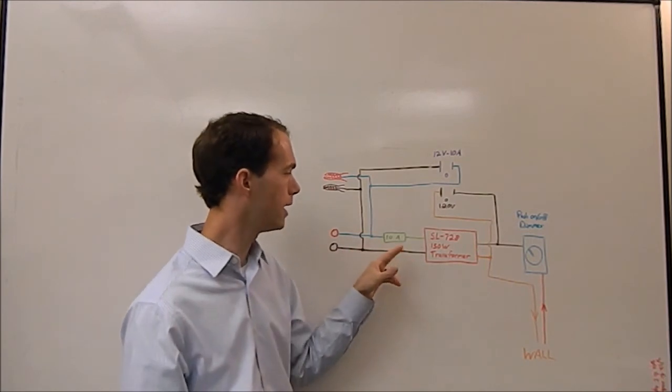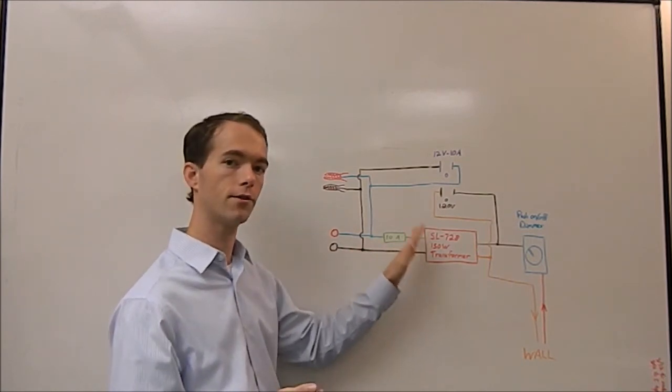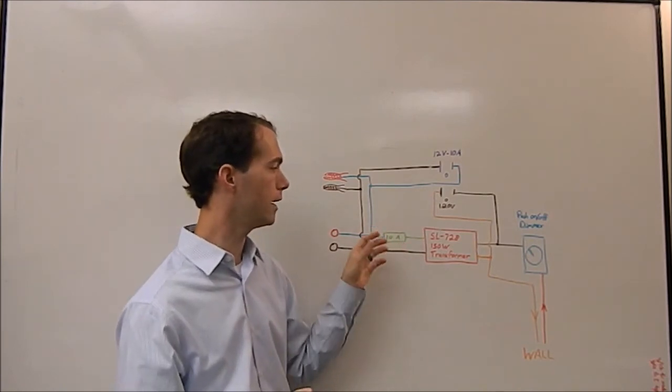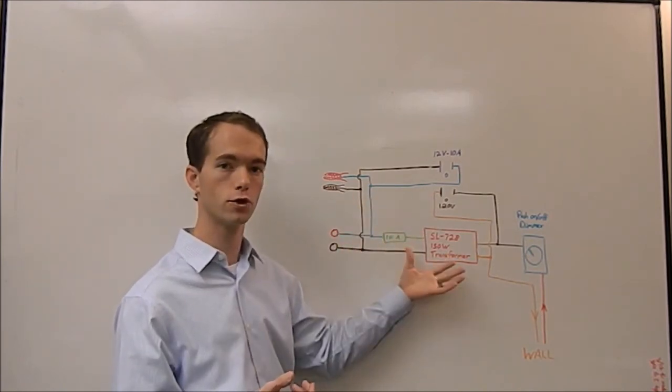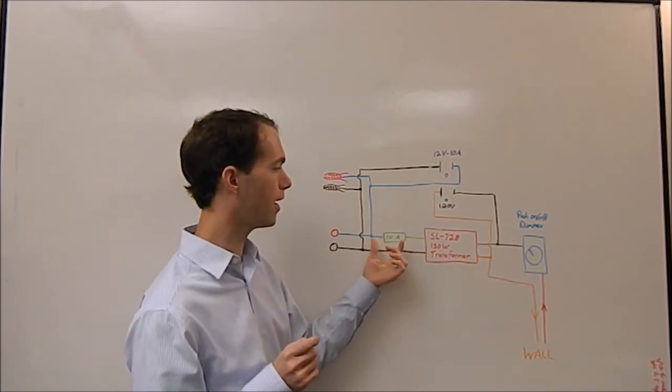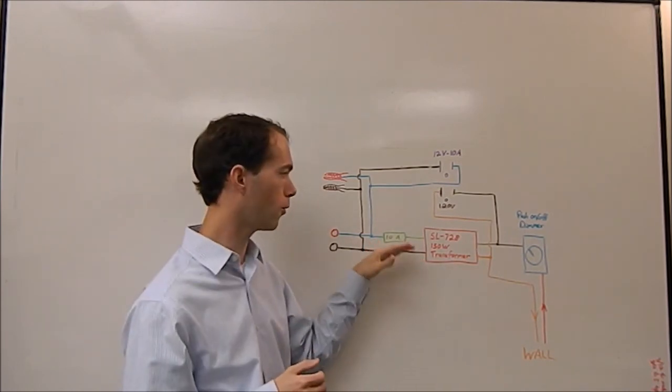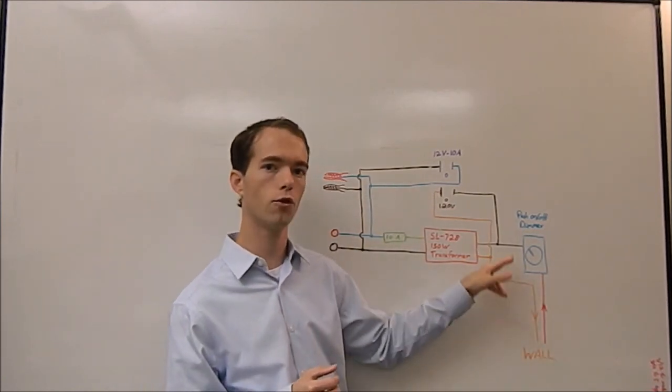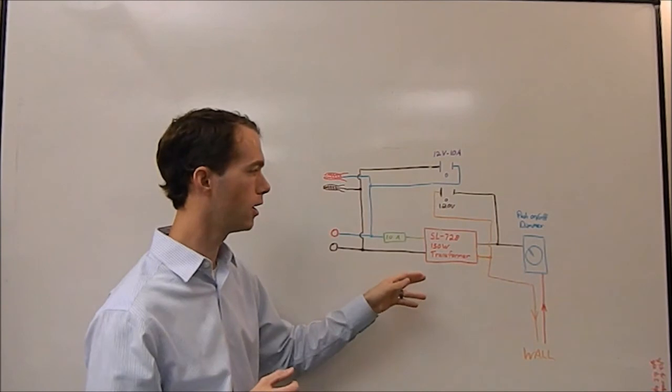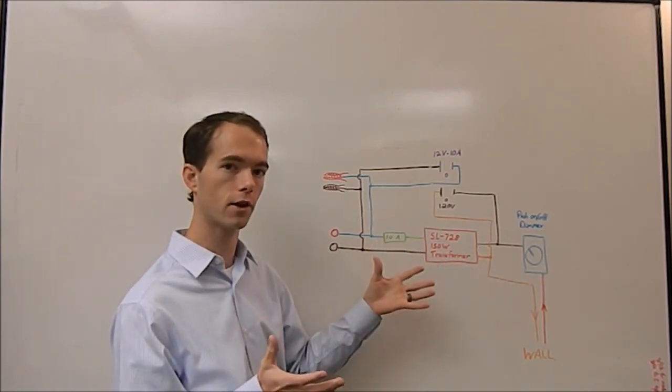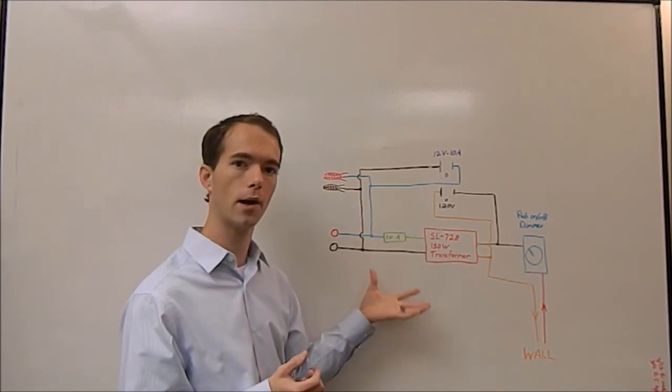Another thing to note is the fuse is on the secondary side or the load side of my transformer because that's what determines what your transformer is going to put out first off. But it's also much easier to find fuses in the range of 0 to 12 and a half amps than it is to find fuses in the 0 to 1.25 amp range because the transformer will change your voltage. Power has to stay constant so if voltage goes down amperage has to go up.